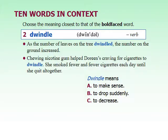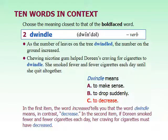Dwindle means to decrease, but to slowly decrease rather than decrease in a huge amount. In the first example, in the fall the leaves from trees slowly fall off — so they dwindle. They don't decrease all of a sudden, but slowly decrease. In the second example, the nicotine gum makes your craving slowly go away.